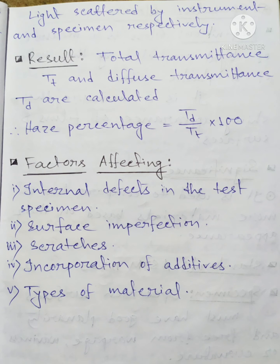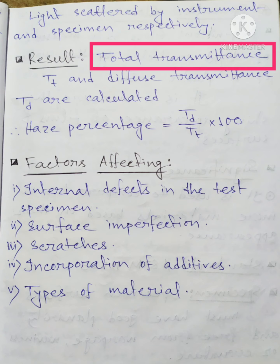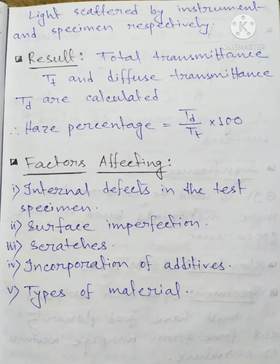The result is calculated using the formula: Haze equals Td divided by Tt multiplied by 100, where Tt is total transmittance and Td is diffuse transmittance. Factors affecting haze include internal defects in the test specimen, surface imperfections such as scratches, and incorporation of additives and types of materials.